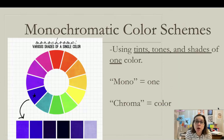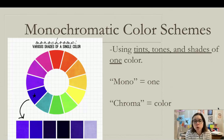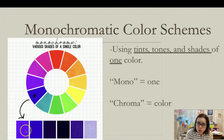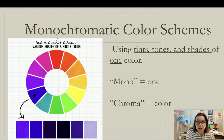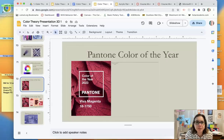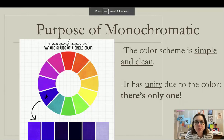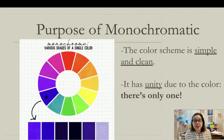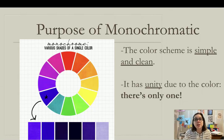Then we have monochromatic color schemes, where you use the tints, tones, and shades of one single color. Mono means one; chroma means color. So for a blue monochromatic scheme, you'd use lighter blues, darker blues, and some tones of blue — low-intensity blues. The purpose of a monochromatic color scheme is that it's simple, clean, and has unity because it uses only one color made lighter, darker, and dull.